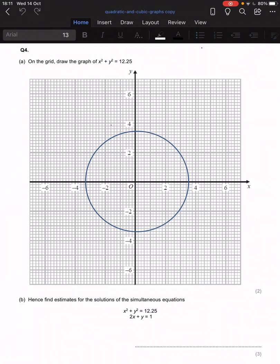Hello Year 11, we meet again. This time we're doing question number 4 on your quadratic and cubic graph past paper question pack. Let's jump straight into it. On the grid, draw the graph x squared plus y squared equals 12.25.